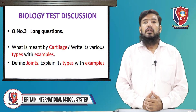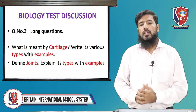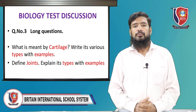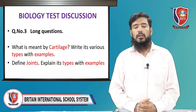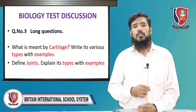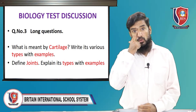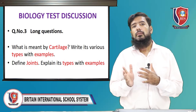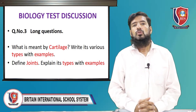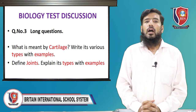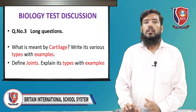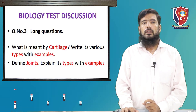Long question: define joint. Write the definition of joint. It has three basic types: immovable joints, slightly movable joints, and movable joints. Within movable joints there are two types: hinge joint and ball and socket joint. Describe these and your long question will be complete. This is the end of the paper discussion.